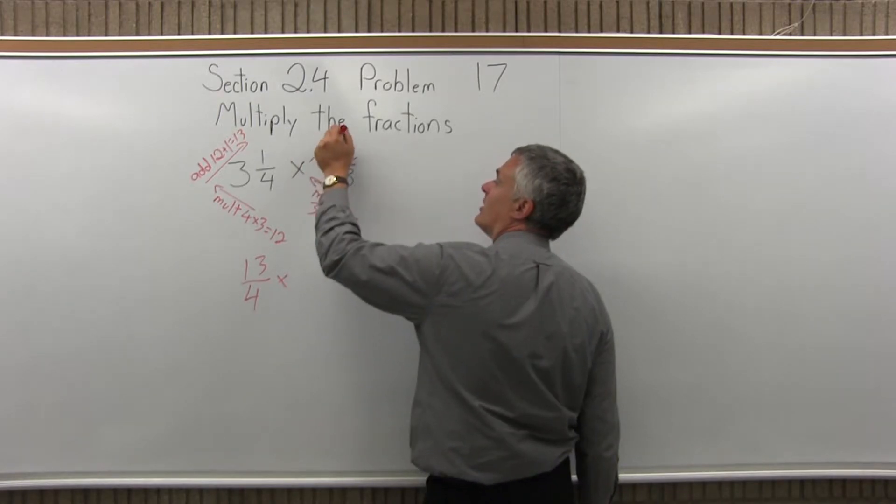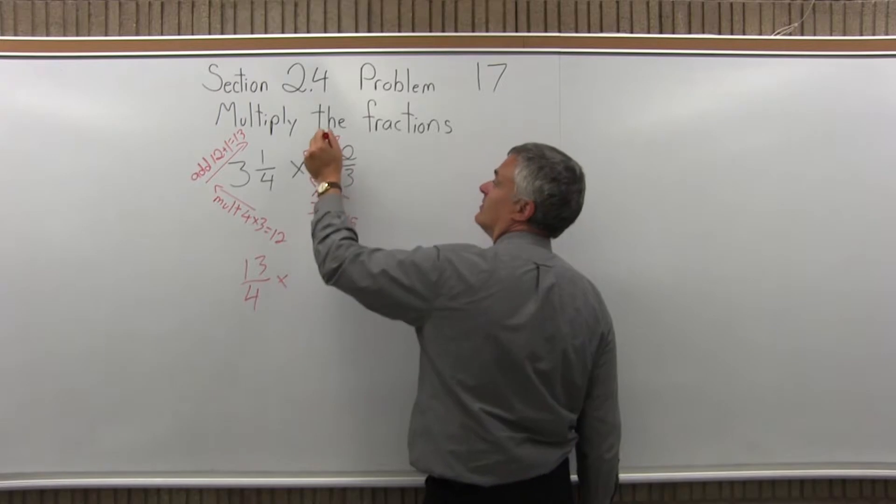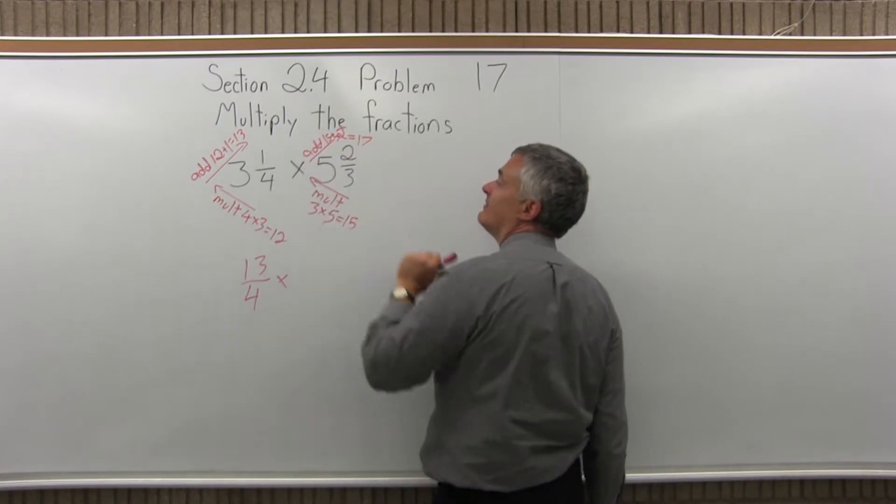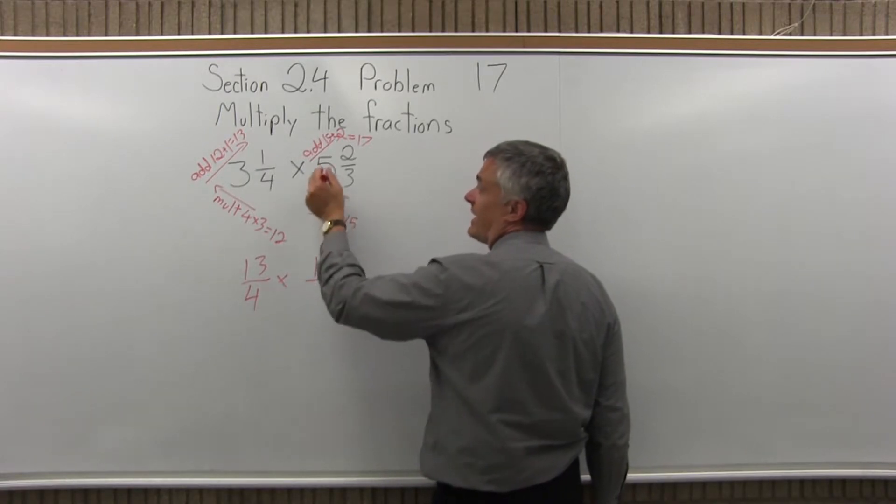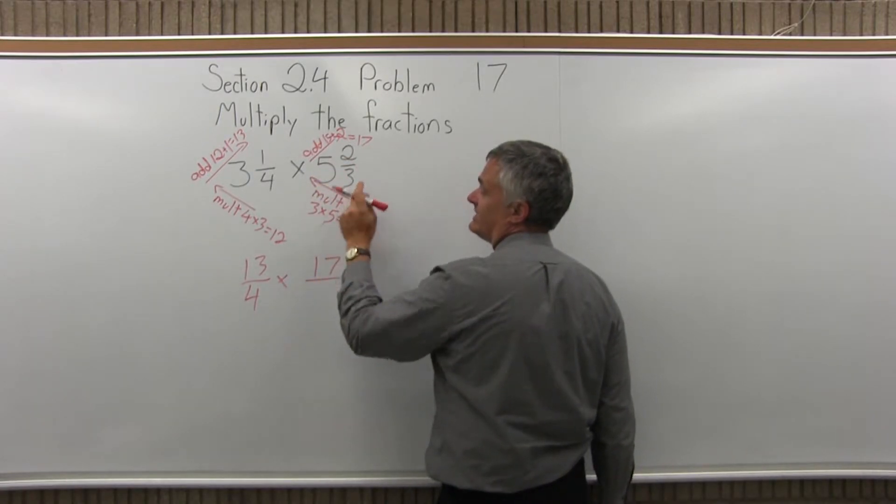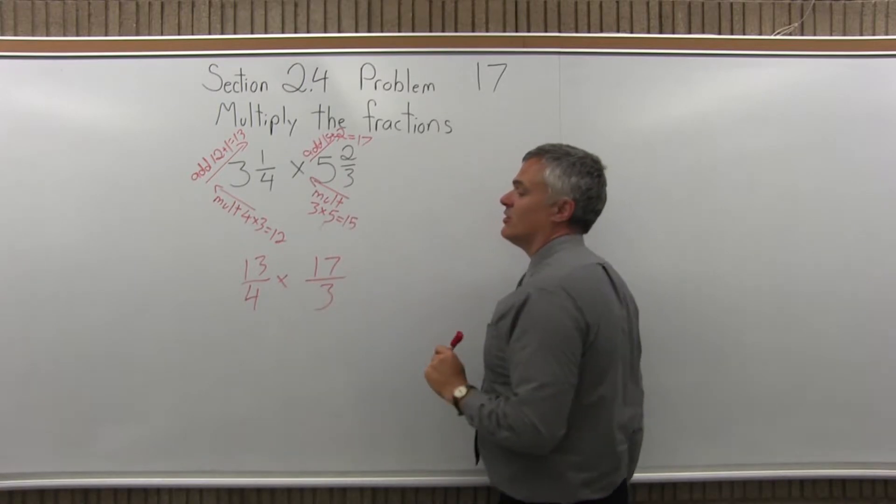Then take the result I got and add, so I will be adding 15 plus 2 more, which is 17. So my second fraction, instead of 5 and 2 thirds, can be written as 17 thirds.